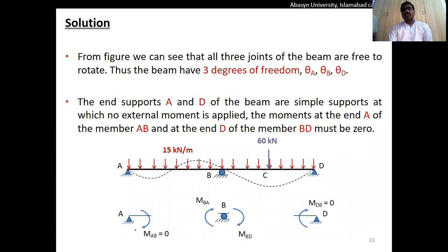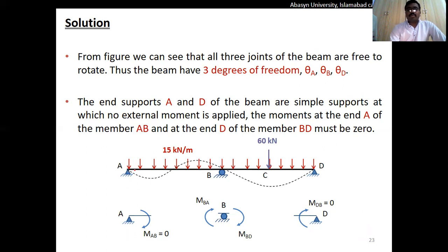The value of E is 200 GPa and moment of inertia I is 700×10⁶ mm⁴. Proceeding with the same steps: the number of degrees of freedom includes rotation at support A, rotation at point B, and rotation at point D — giving three degrees of freedom: theta_A, theta_B, and theta_D.